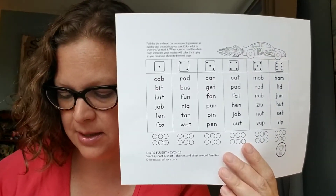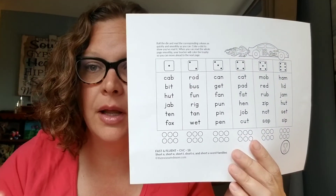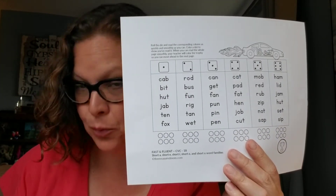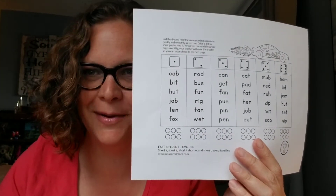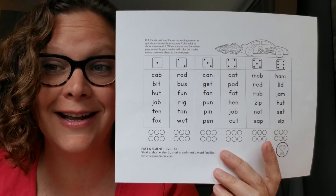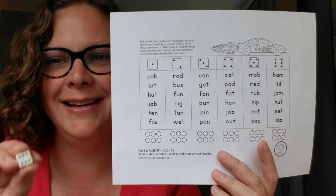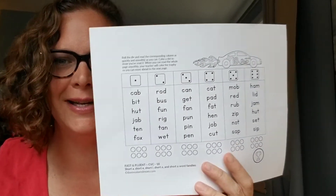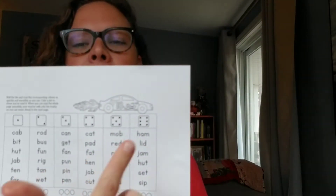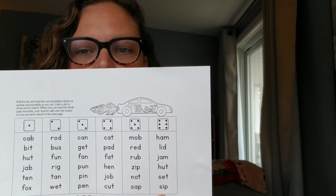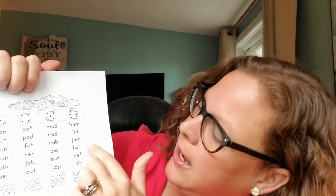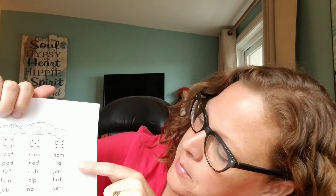Now that I'm done that, I can roll the dice again. Big roll this time. What's the largest roll you can get on the die? Yes, I rolled a six. Good hand, lid, jam, hut, set, sip.